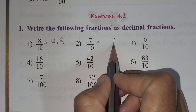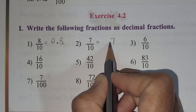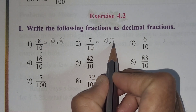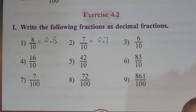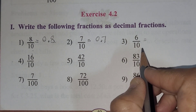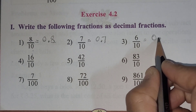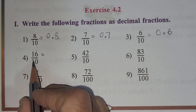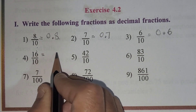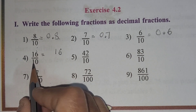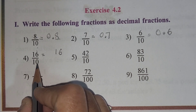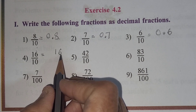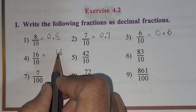Now 7 by 10 — write the numerator first, then how many zeros in 10? One. So after one digit put the decimal point. There's no number with the 7, so put 0 — the answer is 0.7. Next, 6 by 10 — the answer is 0.6. Now 16 by 10: write 16 as it is, there is one zero in the denominator, so put the decimal after one digit.